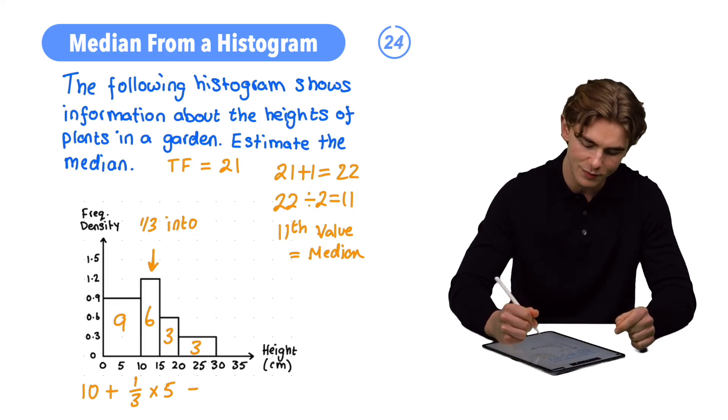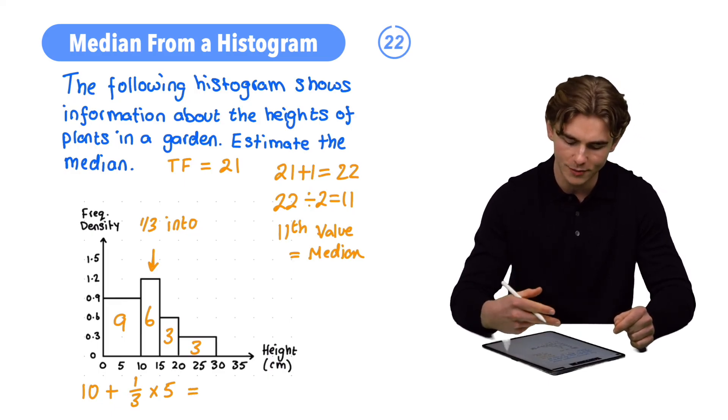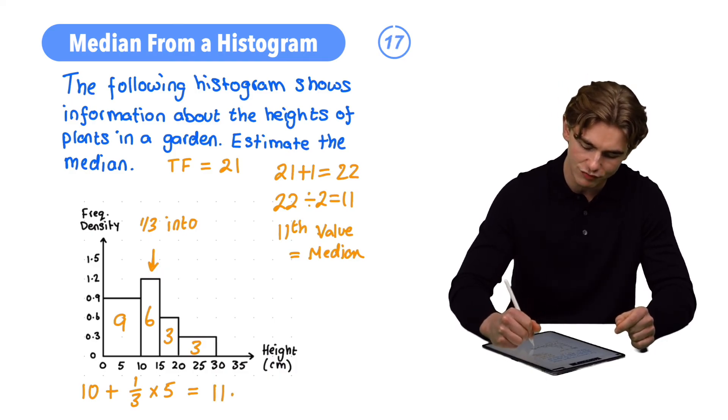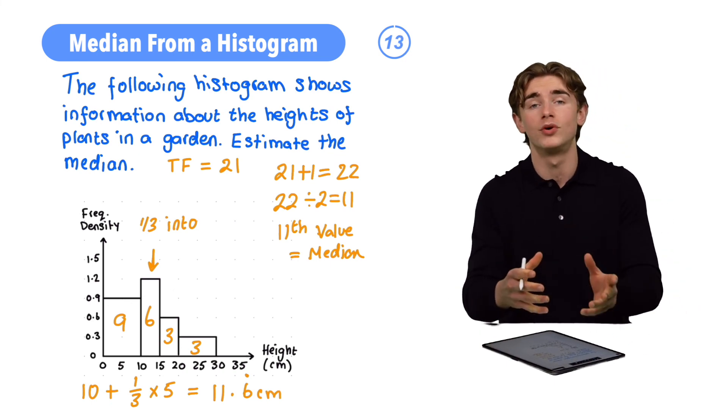10 plus 1/3 times 5. 1/3 times 5, that's going to be 1.6 recurring. 10 plus 1.6 recurring, that is going to give us 11.6 recurring, and that's going to be our answer for our median, 11.6 recurring.